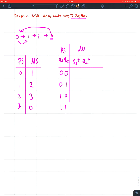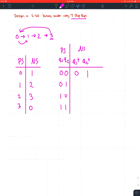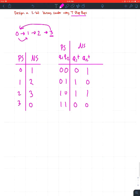For the next state: zero goes to one, which is 01; one goes to two, which is 10; two goes to three, which is 11; and three goes back to zero, which is 00. So we've finished the binary state table for the binary counter.